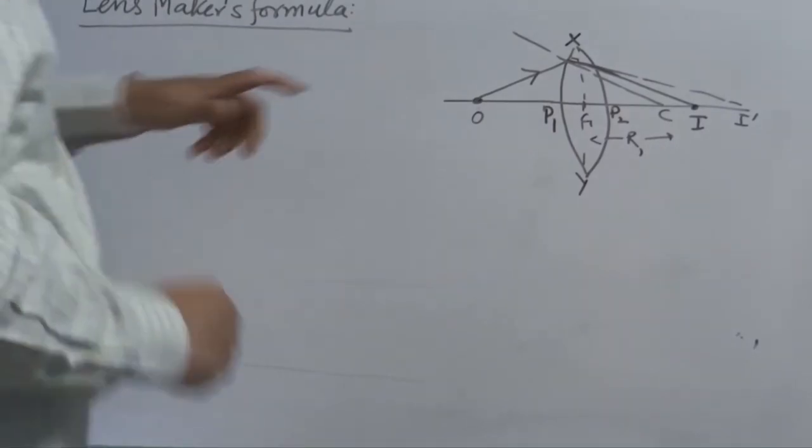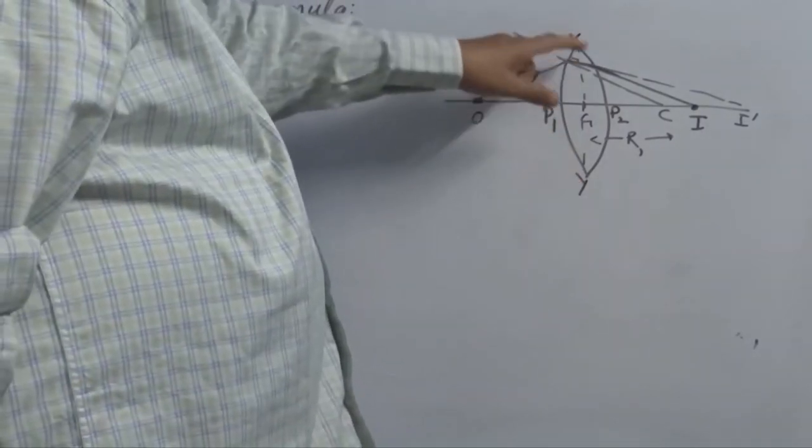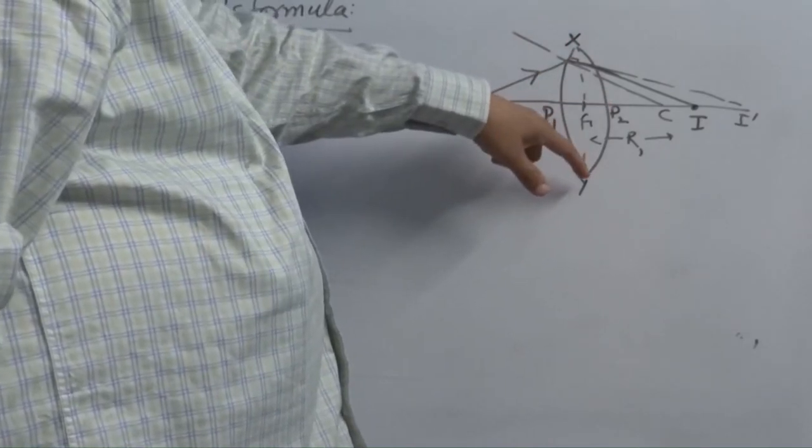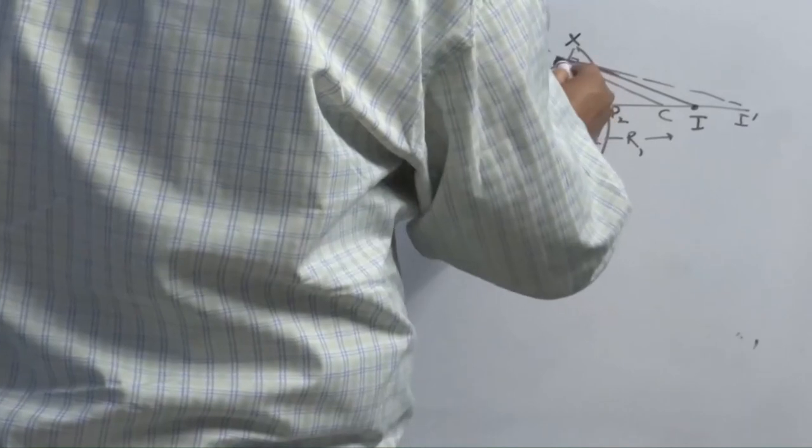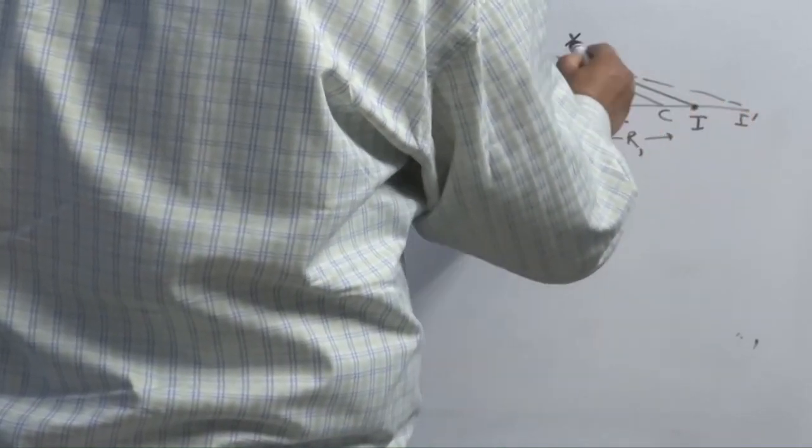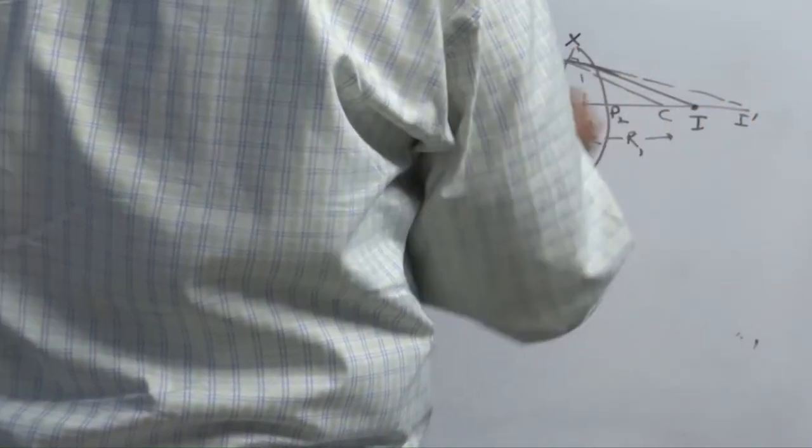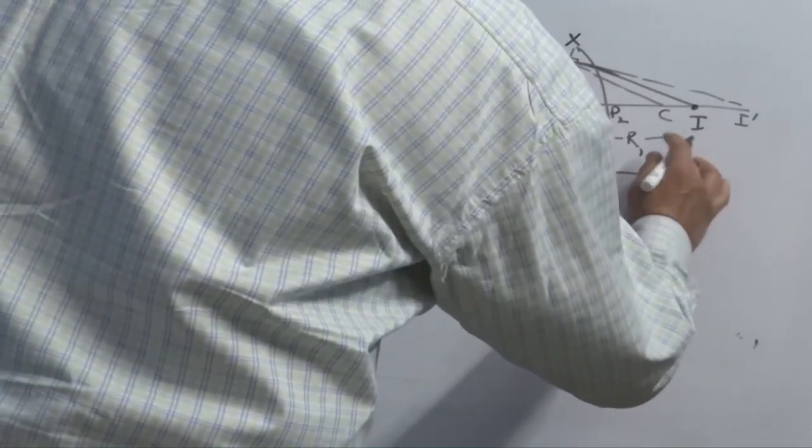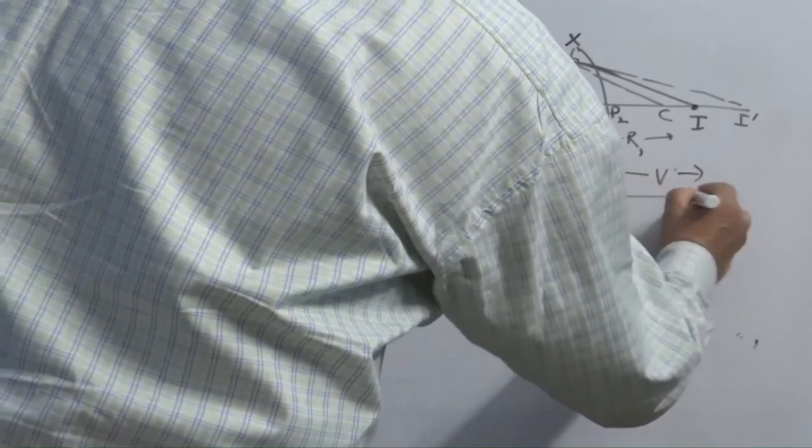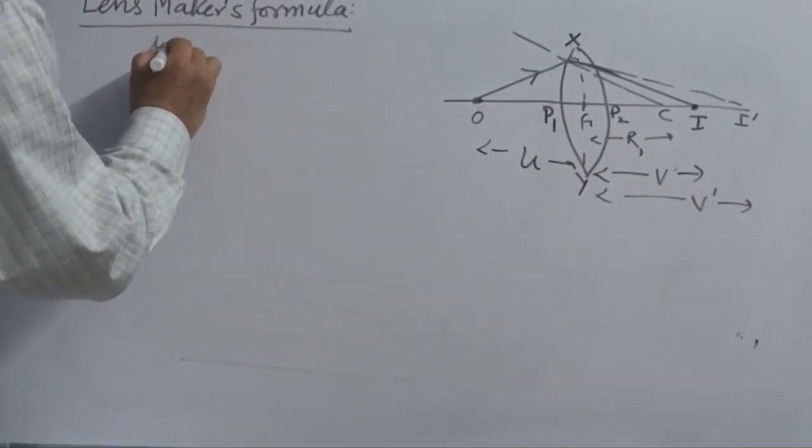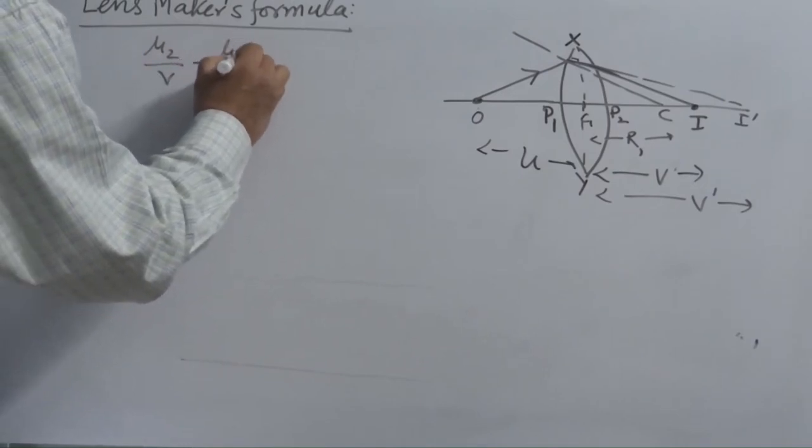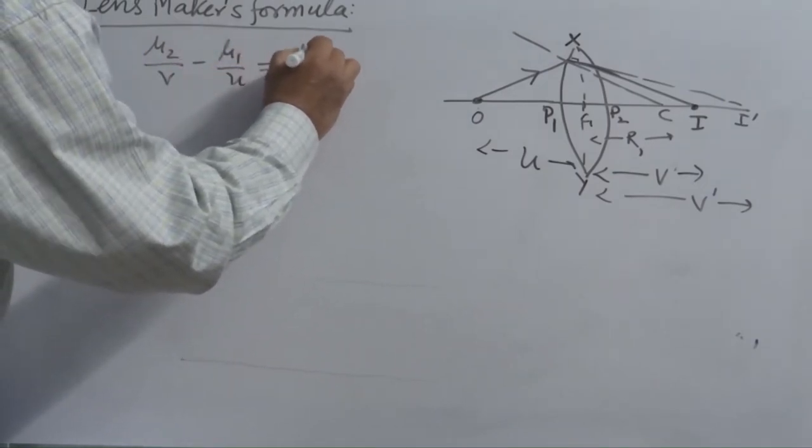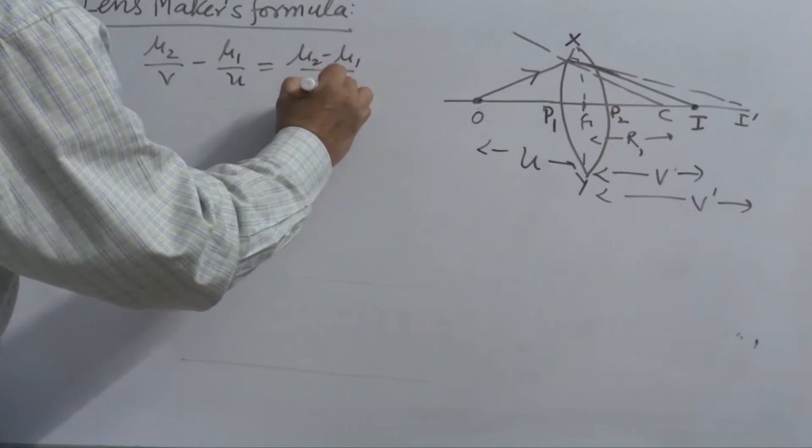You can divide this lens into P, X, P1, Y, P2. P1 and P2 are the poles. X, P1, Y, X, P2, Y. This is the image formed by the first surface. When you join second half of the lens, final image is formed at I. This is U. This is V. You can apply and this is up to I dashes. Use the formula twice.